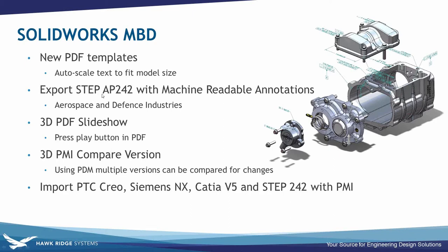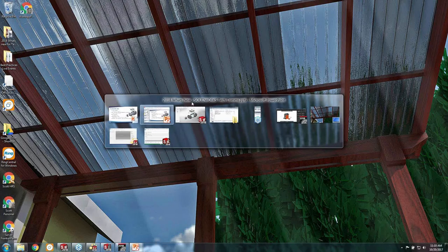Also new is STEP AP242, for aerospace and defense industries. This is a newer STEP 242 file format that exports PMI manufacturing data with the STEP file. Many companies actually require this file format. These are machine-readable annotations in the 3D model that export right with the 3D PDF. There's also a 3D PDF slideshow — you hit play and it plays through all the views, which is really nice.